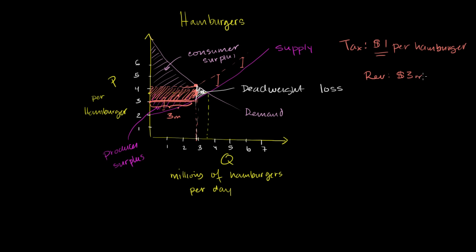This is interesting because the government official may have expected more — projecting 3.5 million burgers times $1 equals $3.5 million. But they didn't account for the fact that making burgers more expensive reduces quantity demanded. The actual equilibrium quantity is only 3 million. And the tax removed surplus from both consumers and producers — the orange rectangle eats into consumer surplus, while the difference between what producers receive and their opportunity cost is now less.